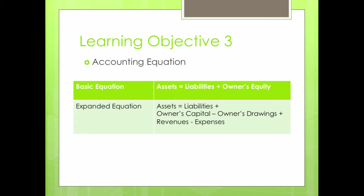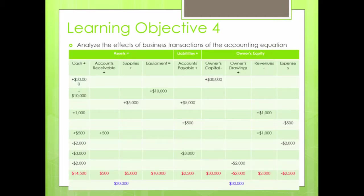We analyzed transactions and recorded them in tabular form. We did that by identifying at least two accounts affected by the transaction we were analyzing, and by making sure the ending balances were equal to each other based on the accounting equation — assets equals liabilities plus owner's equity.